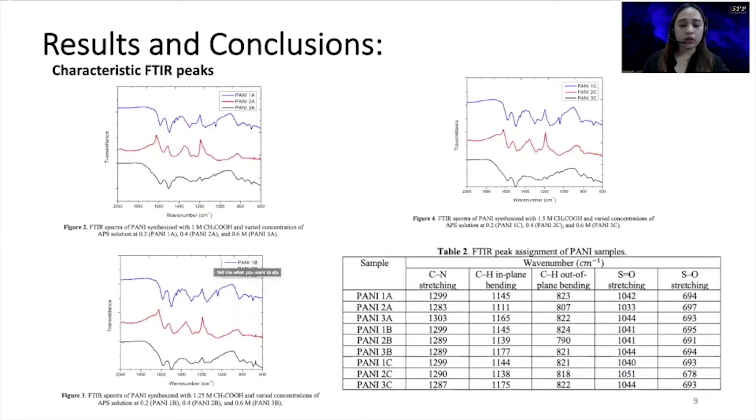Figures 2 to 4 show the FTIR spectra of PANI synthesized from each concentration of acetic acid with varied concentrations of APS solution. Table 2 shows the FTIR peak assignment of PANI samples. In conclusion, the band attributed to CN stretching shifted to lower wavenumber with increasing APS solution except PANI 3A, suggesting that increasing the concentration of the APS solution can decrease electrical conductivity.